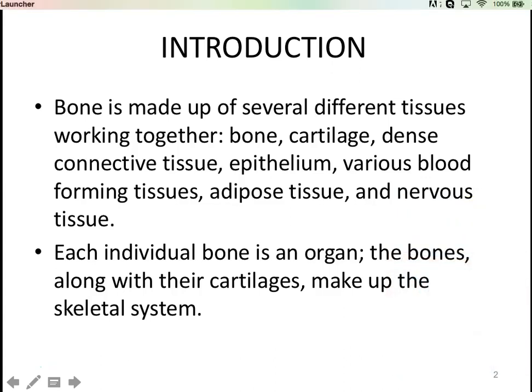Bone is made of a whole bunch of different tissue types working together. We have bone tissue, cartilage, dense connective tissue, epithelial tissue, blood vessels, adipose tissue, and nerve tissue. So really, a single bone actually has quite a lot of different parts working together to make it survive and be what it is. We consider each bone technically an organ in the skeletal system.